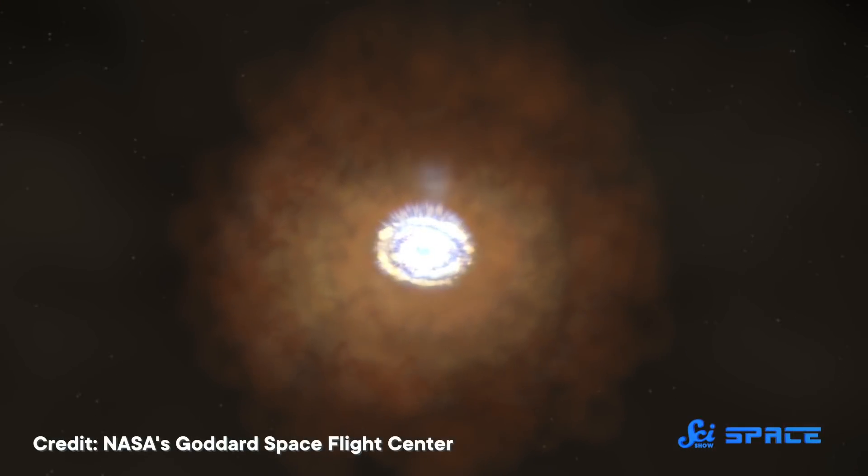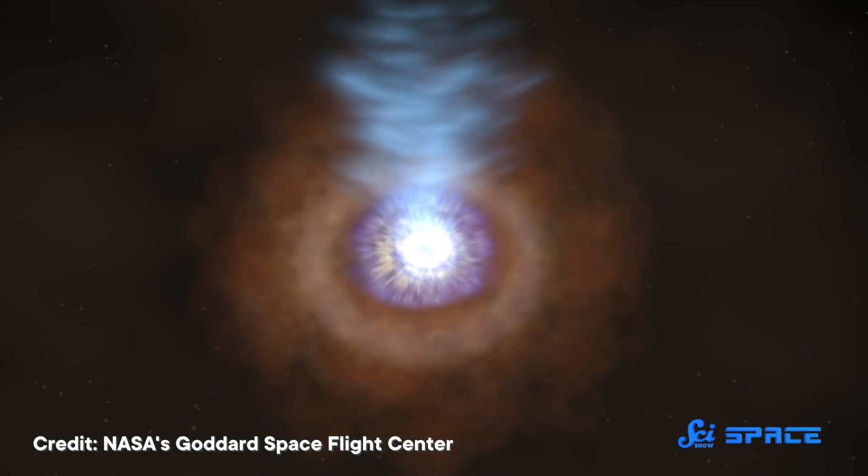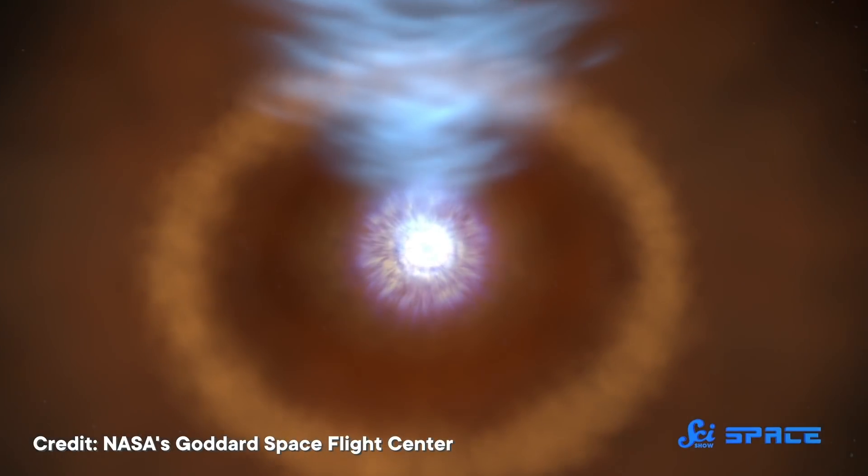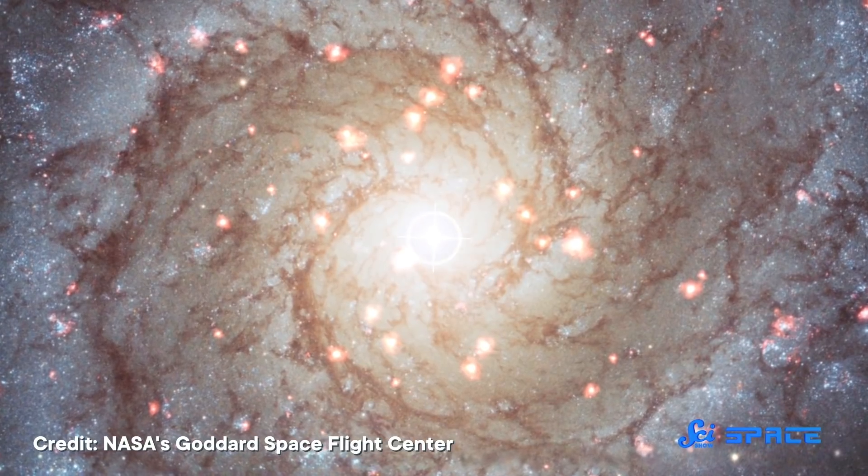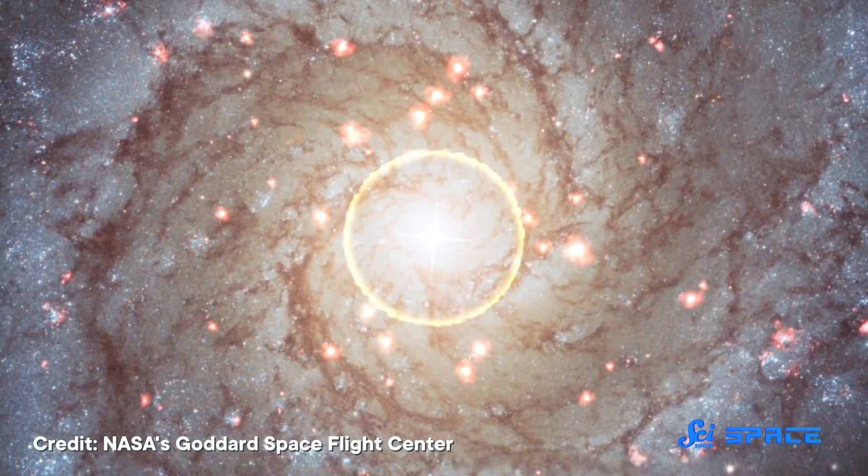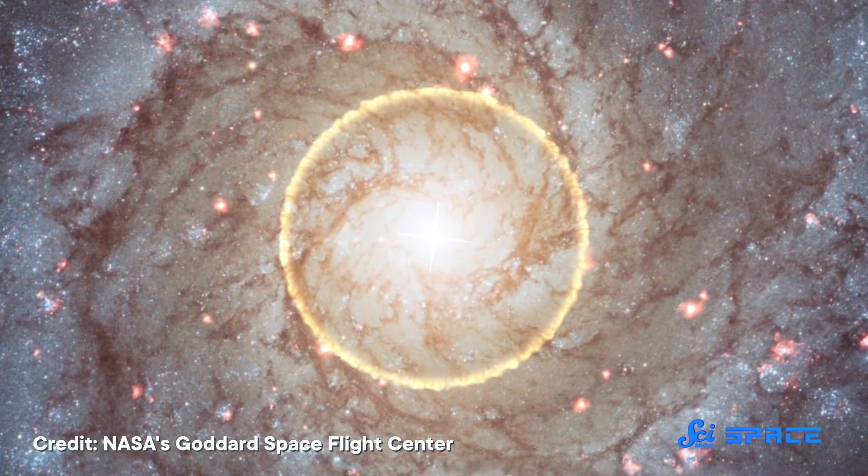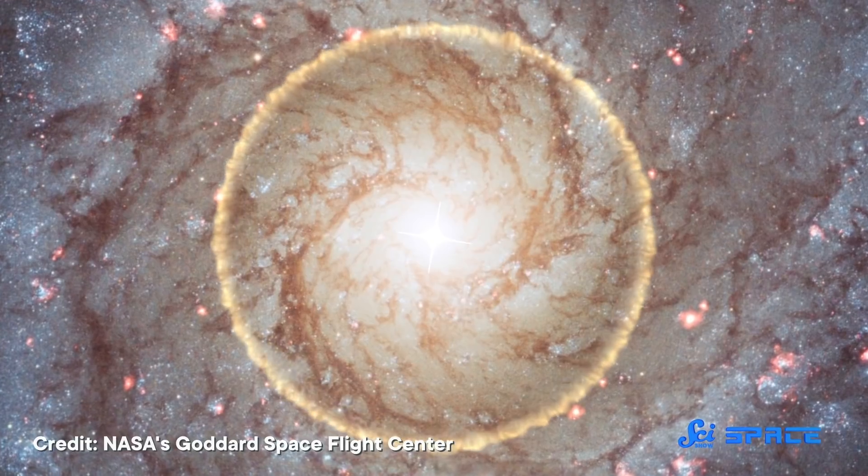Well, the next question was how much of an influence this outflowing material could have on the rest of the galaxy. Like, could it redistribute energy or matter so much it prevented a bunch of baby stars from forming? Or actually, make a bunch of new baby stars? Astronomers have been looking for an answer for decades. And just a few years ago, the jury was still out.